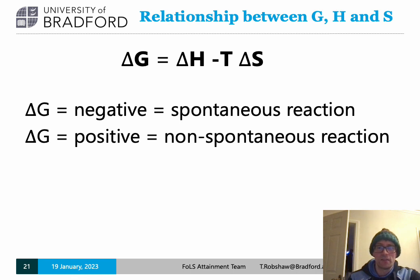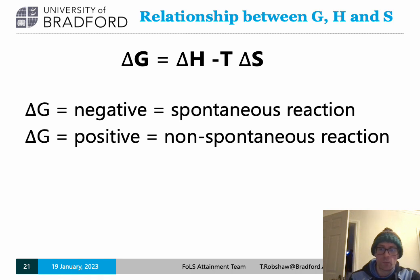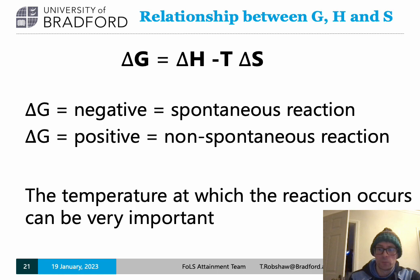Negative delta G means the reaction is spontaneous. Positive delta G means the reaction is not spontaneous. Delta H and delta S are intrinsic properties of the chemical reaction — we cannot do anything to change them. The only term in the equation delta G = delta H − T·delta S that we can possibly control is the temperature. This is why temperature control, both in nature and in the chemical industry, is absolutely critical.